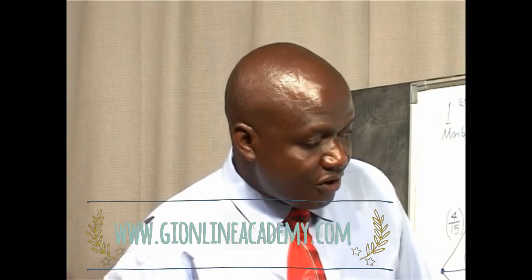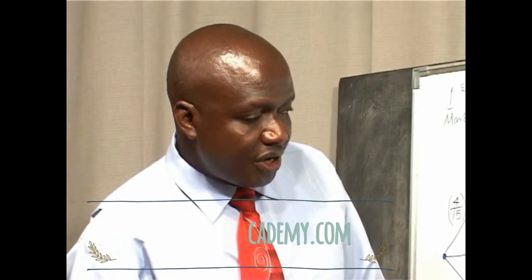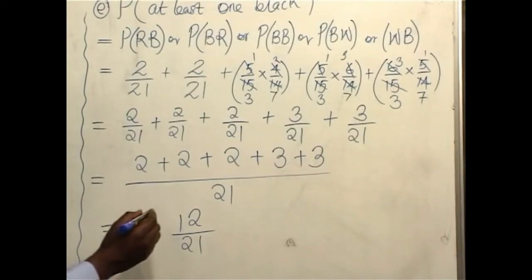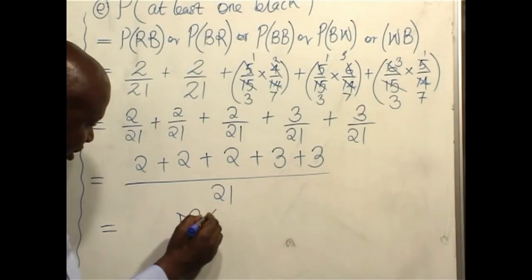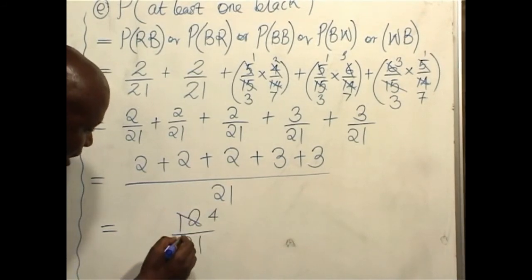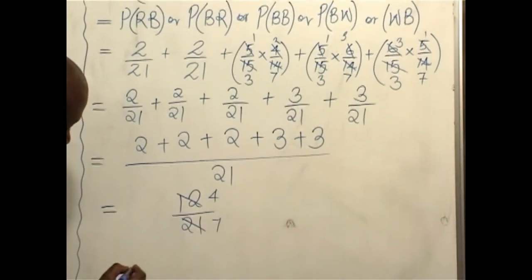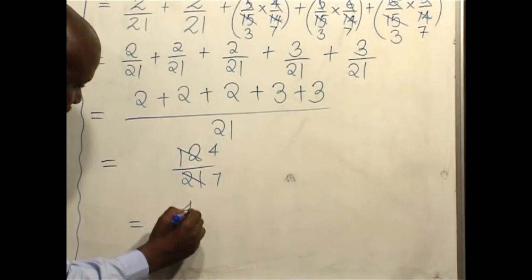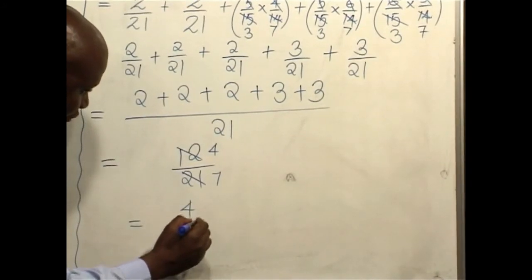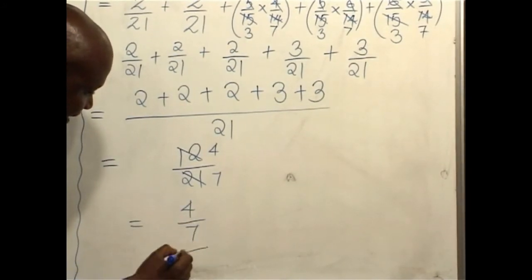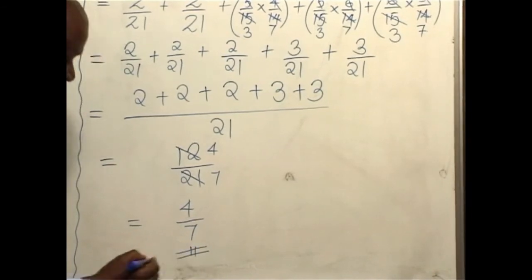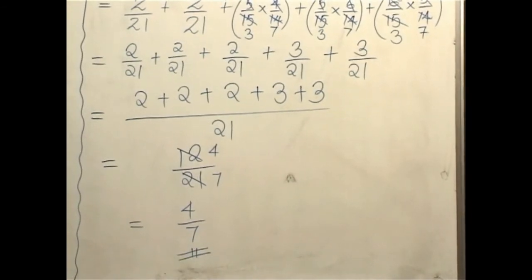So what we are going to have is 12 as the numerator divided by 21. Remember, answers must always be simplified to the lowest terms, and the common factor between the numerator and the denominator is 3. We divide by 3, we get 4. After dividing by 3, we get 7. So finally, our answer is going to be 4 over 7. That is the probability that at least one of them is black.